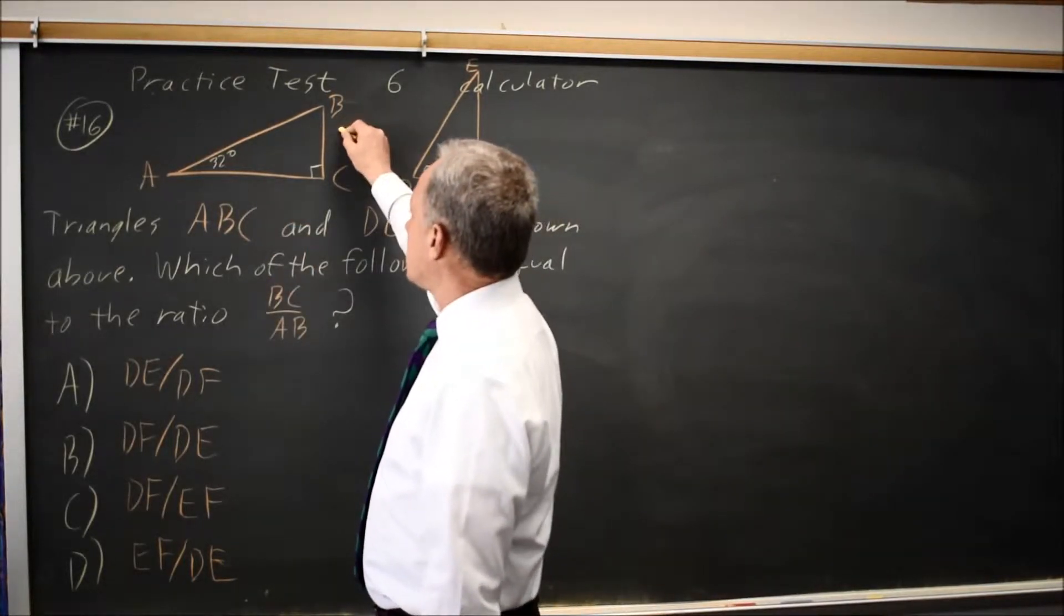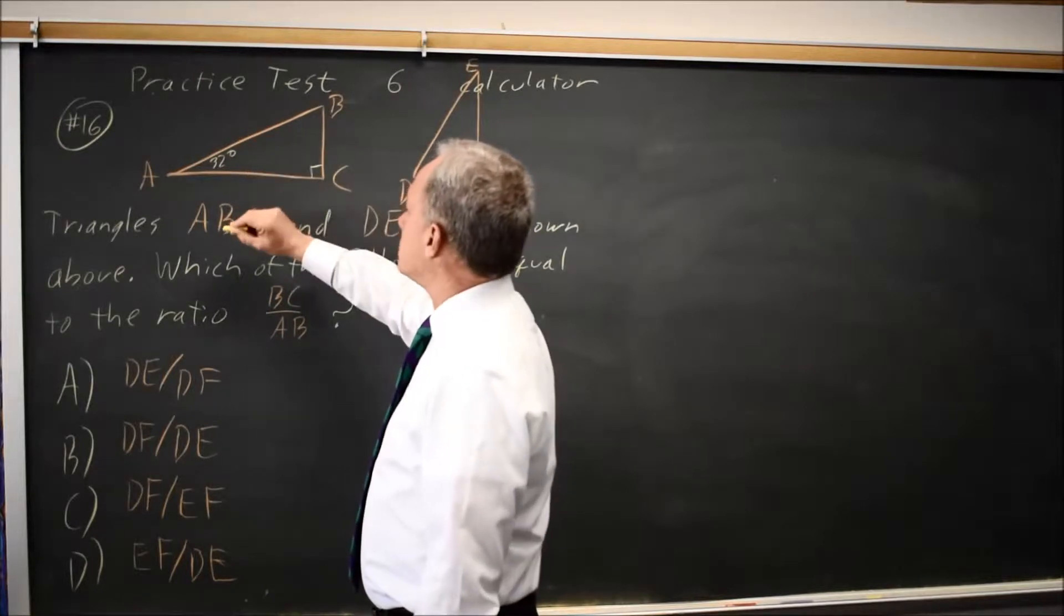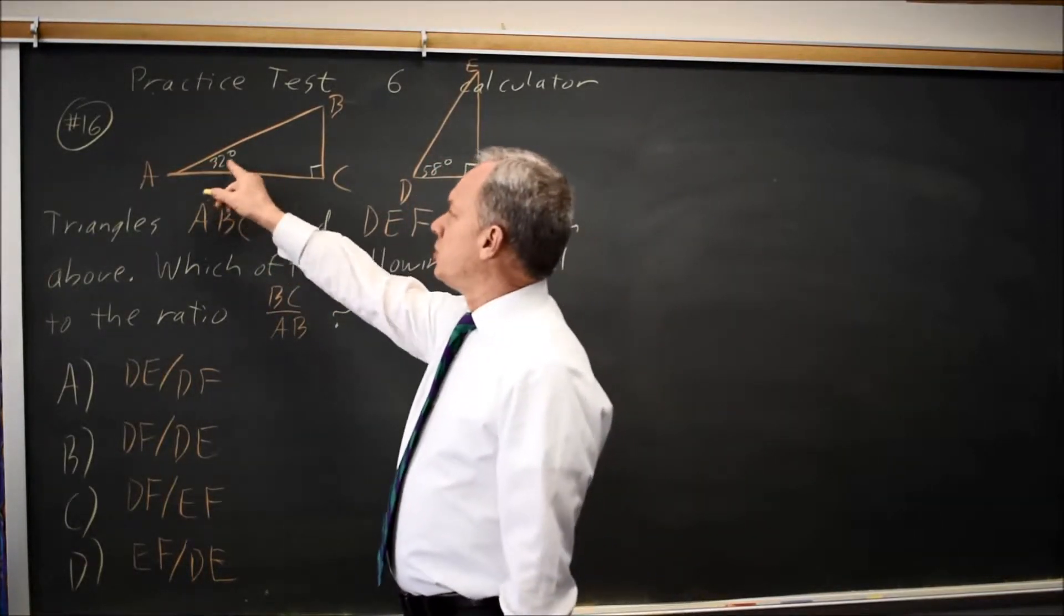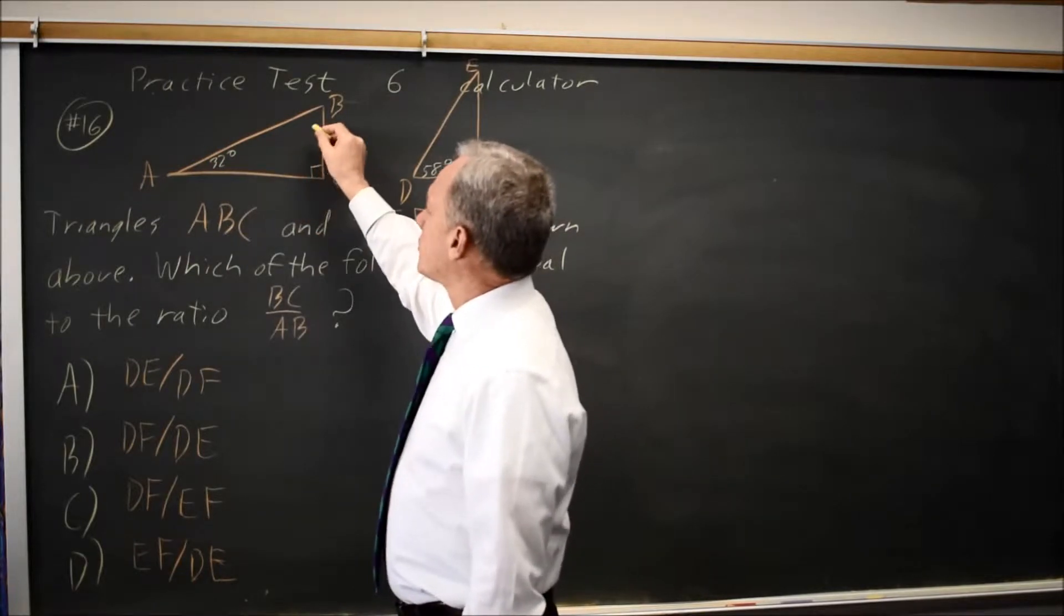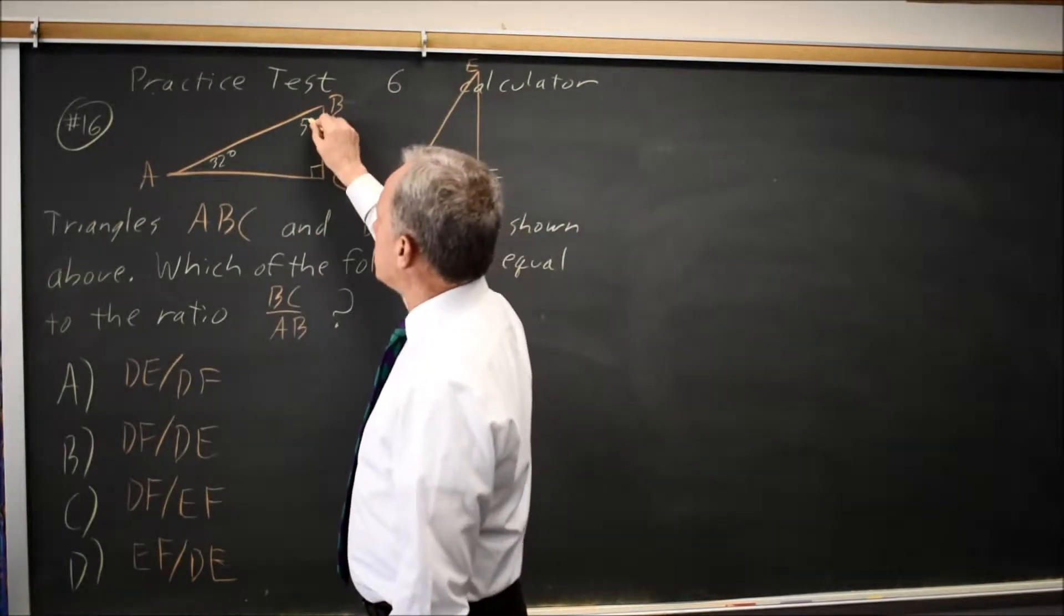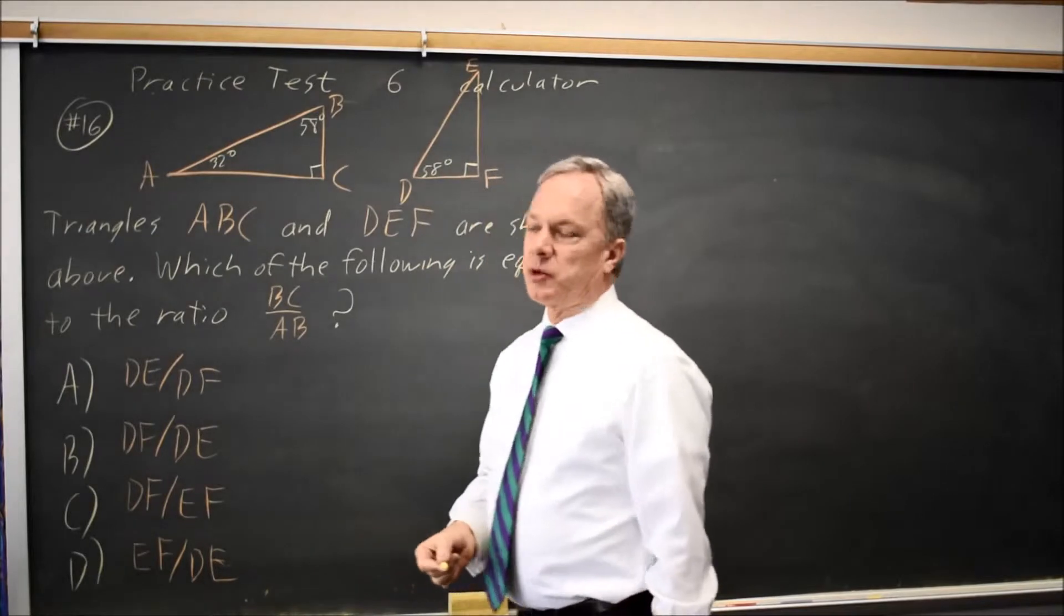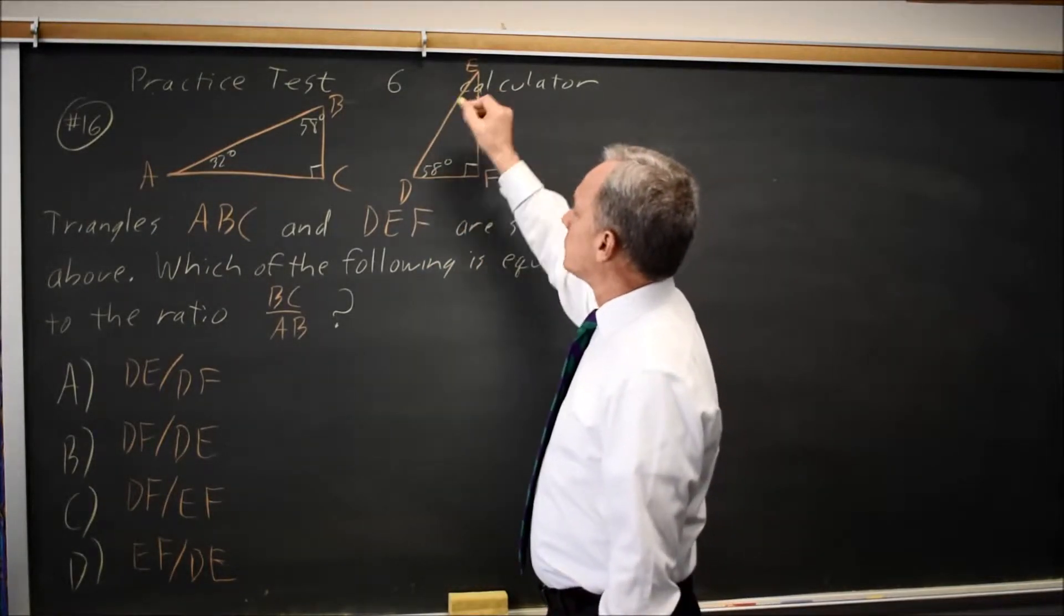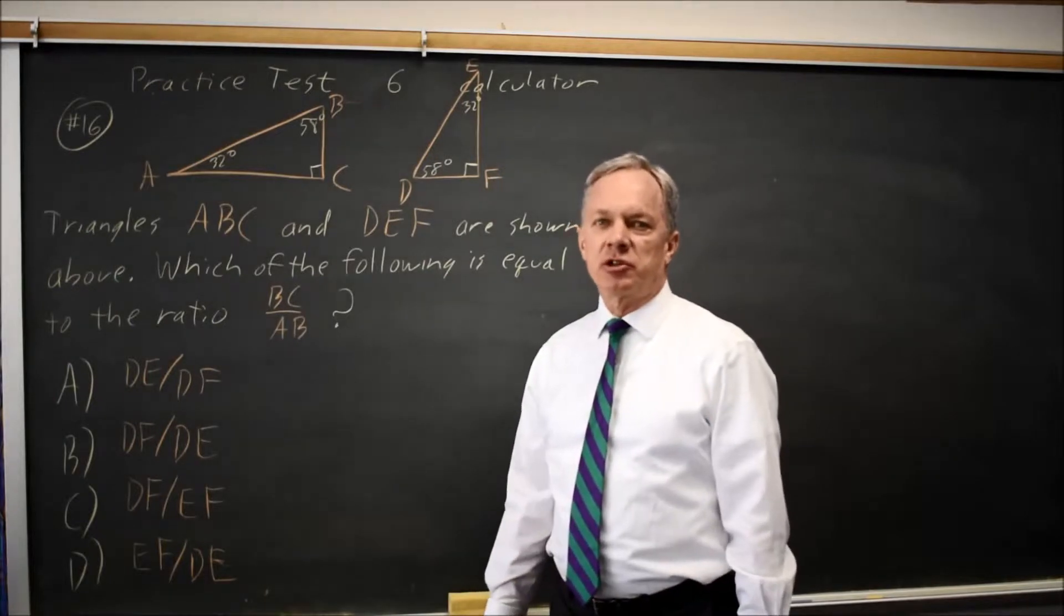BC is the short leg, AB is the hypotenuse. If this angle is 32 and this is 90, the third angle is 58 because the angles of the triangle add up to 180. Since this is 58, we have 32 degrees here. So these are similar triangles.